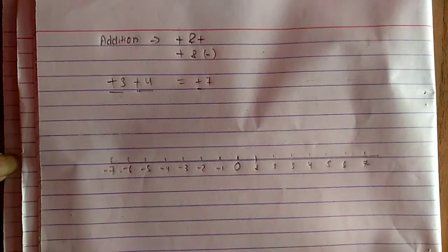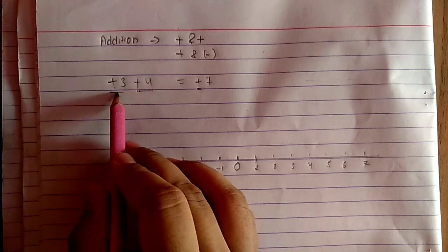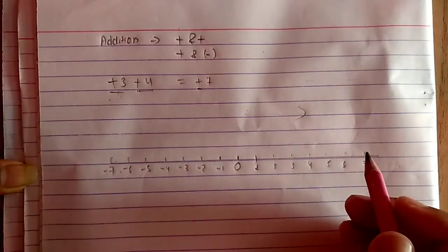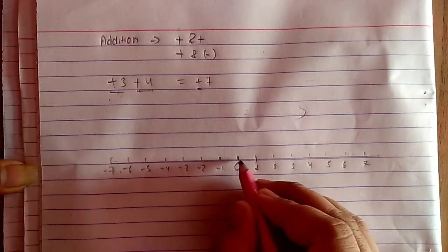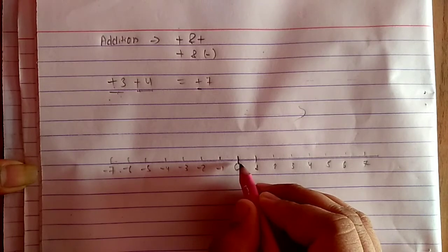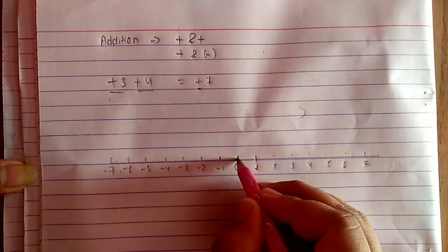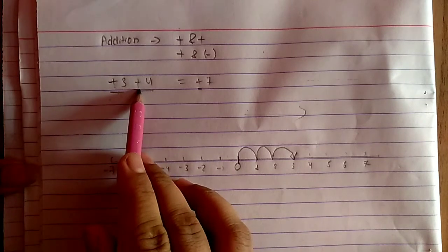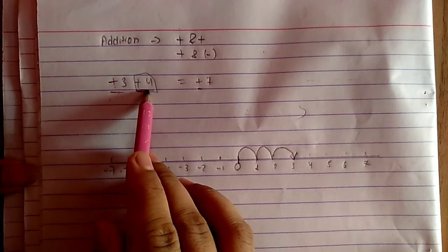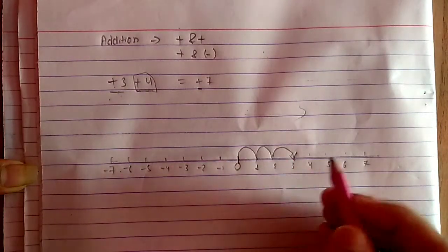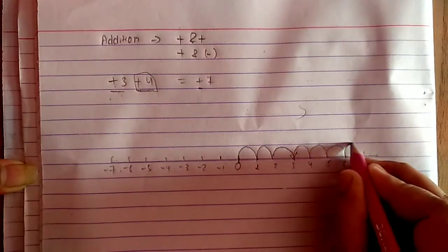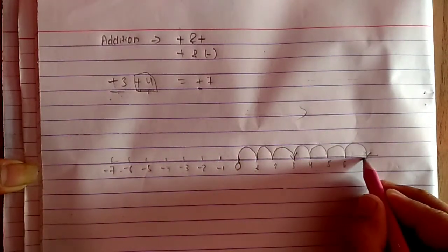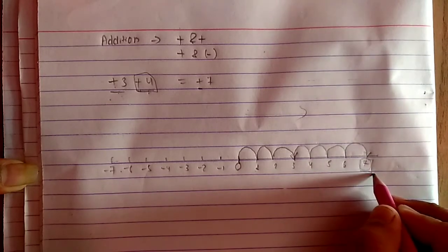The first number given is plus three. A positive number always moves in the right direction. Starting from zero as the point of reference, I count plus one, plus two, plus three, and mark an arrowhead. Then from plus three, the next digit is plus four, so I continue marking one, two, three, four — up to six on the number line. The total, three plus four, equals seven, and on the number line we also end up at seven.